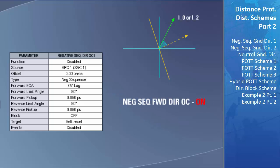If the zero sequence current or the negative sequence current selected in the type field falls to the right of the line drawn by the forward limit angle, the negative sequence forward directional overcurrent flag will turn on. Making this angle less than 90 degrees will mean the polarizing current needs to be much closer to the forward element characteristic angle for the ground current to be recognized as flowing in the forward direction.